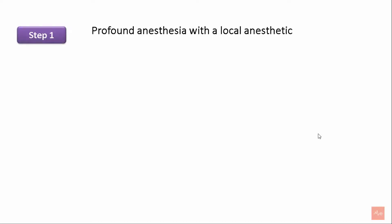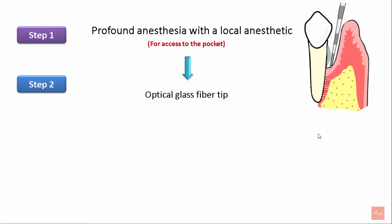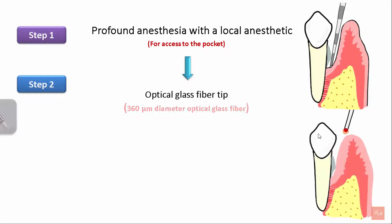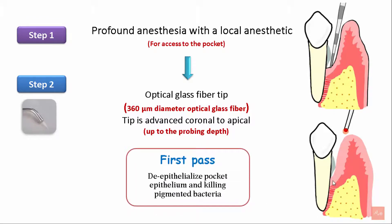Step one of the LENAP protocol involves giving profound anesthesia to the patient with a local anesthetic agent, which helps in exploring or assessing the pocket depth. This is followed by use of a 316 micrometer diameter optical glass fiber tip. The tip is advanced from the coronal direction to the apical direction up to the probing depth of the pocket — this is also called the first pass.